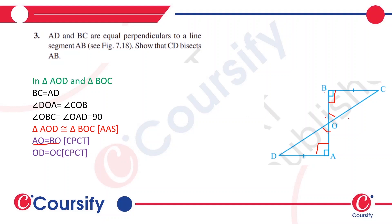By CPCT we can say that AO equals BO and OD equals OC. We have shown that CD bisects AB and also that AB is bisecting CD. So we have solved some extra part in it.